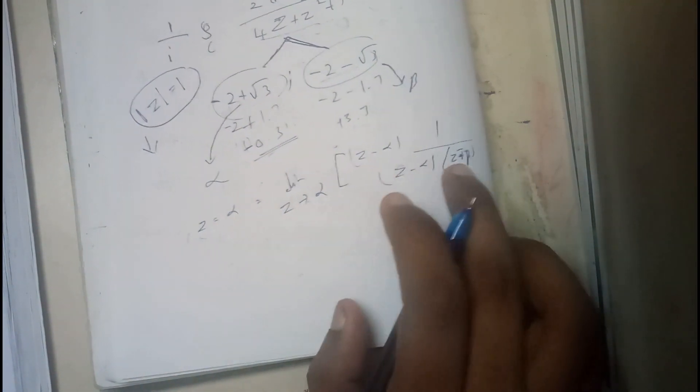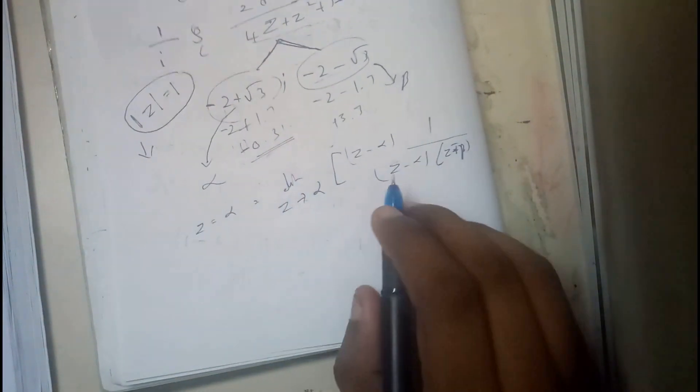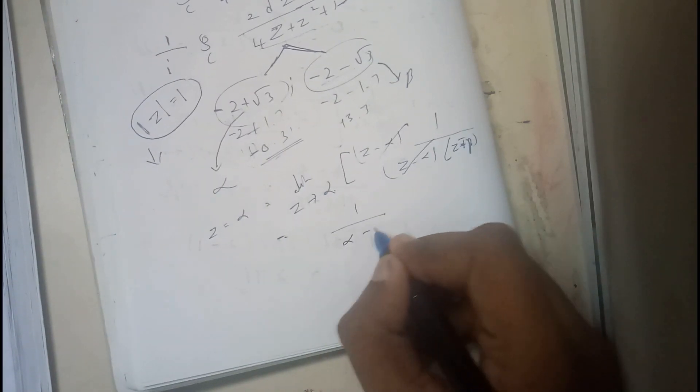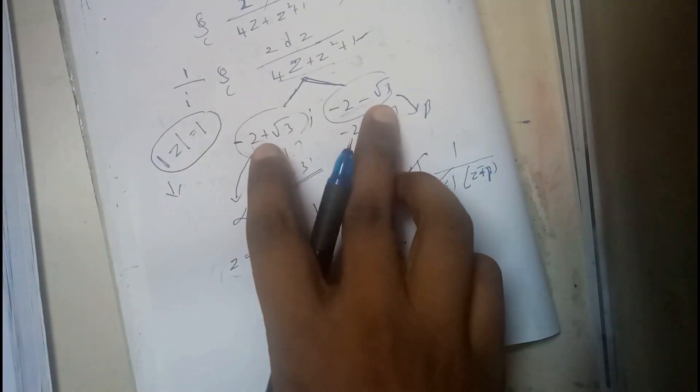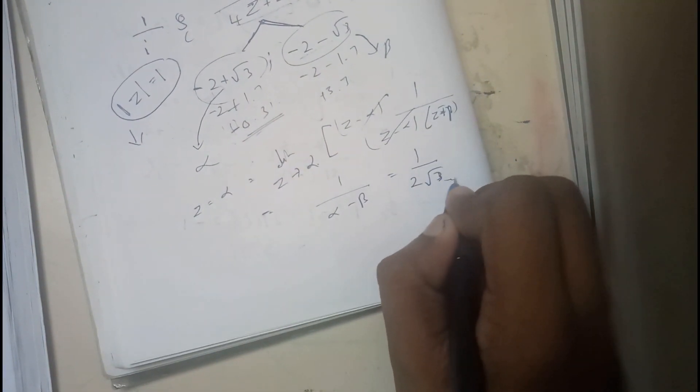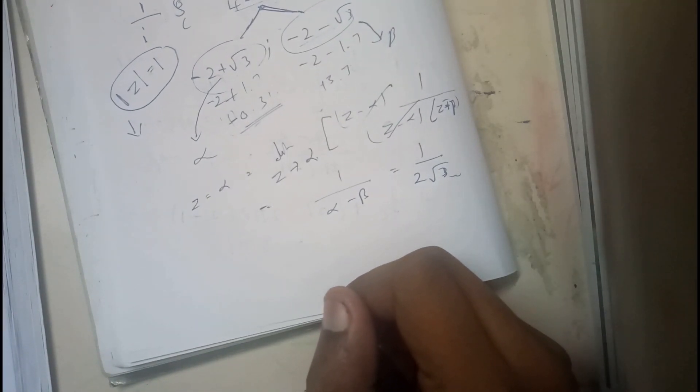So z - α and z - α is going to give this equation. I'll be canceling these two and I'll be substituting α here. So 1/(α - β). So if you subtract these both, what will you get? You'll be getting nothing but 1/(2√3). So now I hope everyone got a small idea on this.